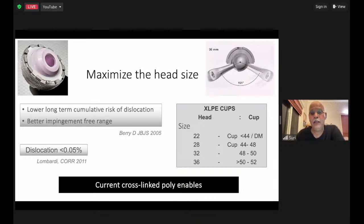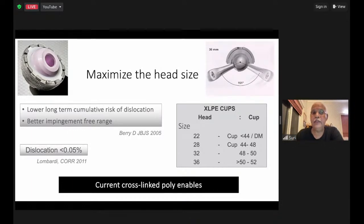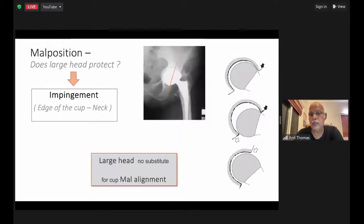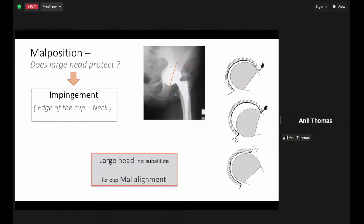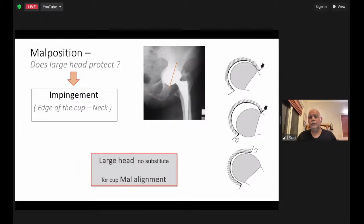Maximizing the head size is one lesson learned — it gives lower cumulative risk of dislocation over the long term and better impingement function. The current cross-linked polyethylene enables a larger head even in smaller outer diameter cups. However, a large head does not allow us to malposition the socket. This can still impinge at various points. Large head is no substitute for malalignment — the basic fundamentals do not change.